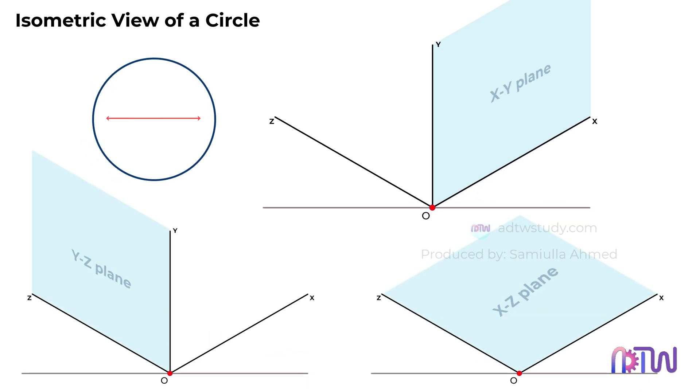Consider the diameter of this circle to be 10mm. This dimension can be anything, but for this example, let's assume it to be 10mm.